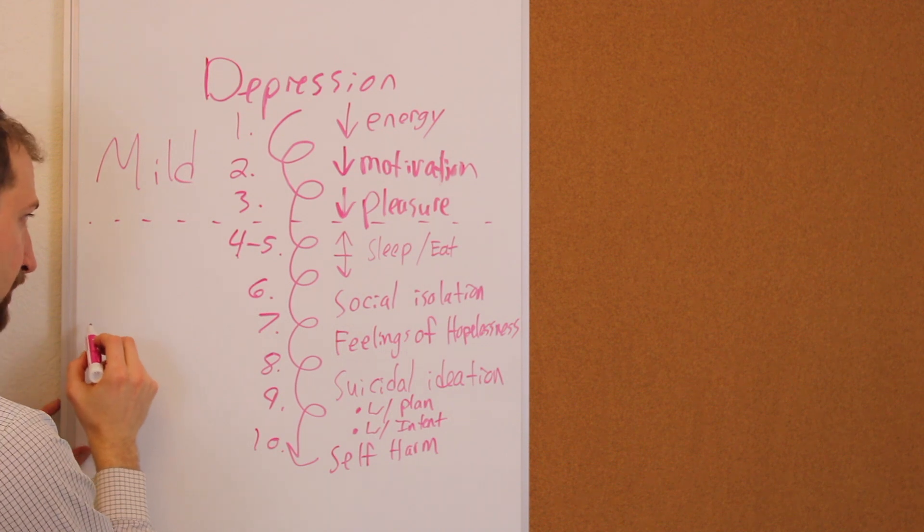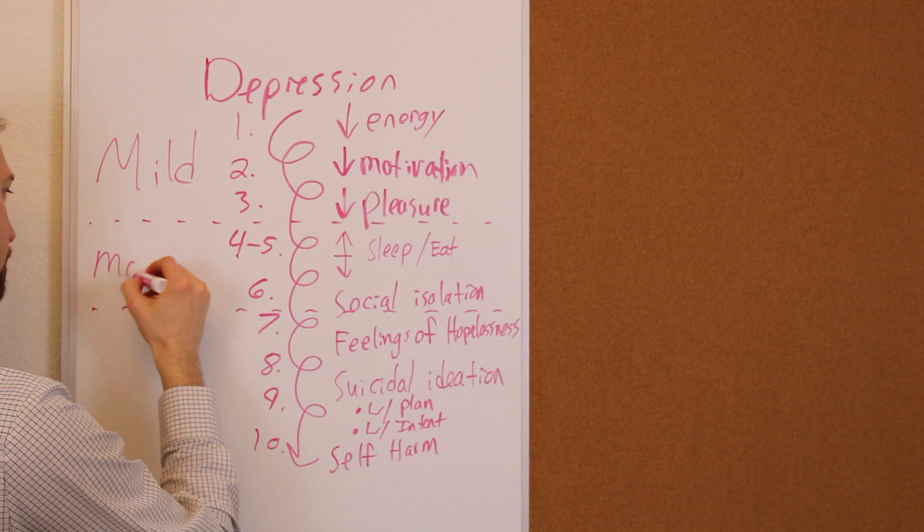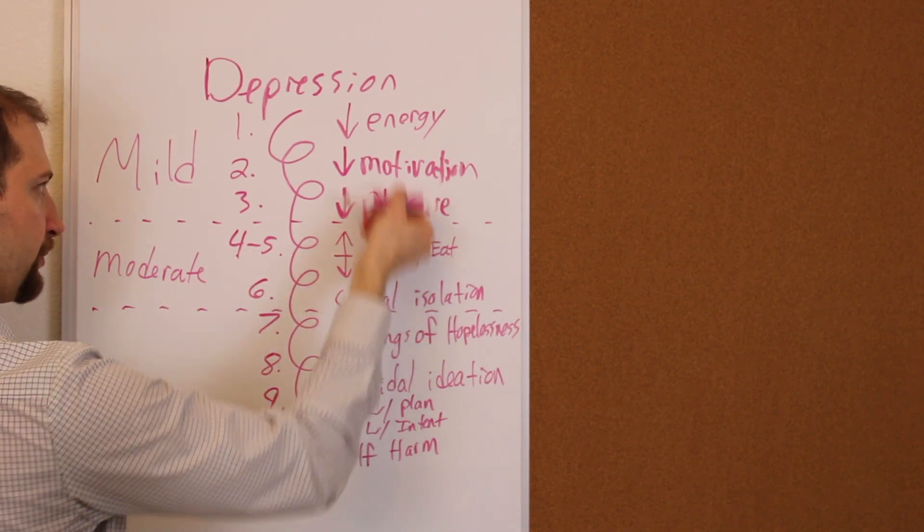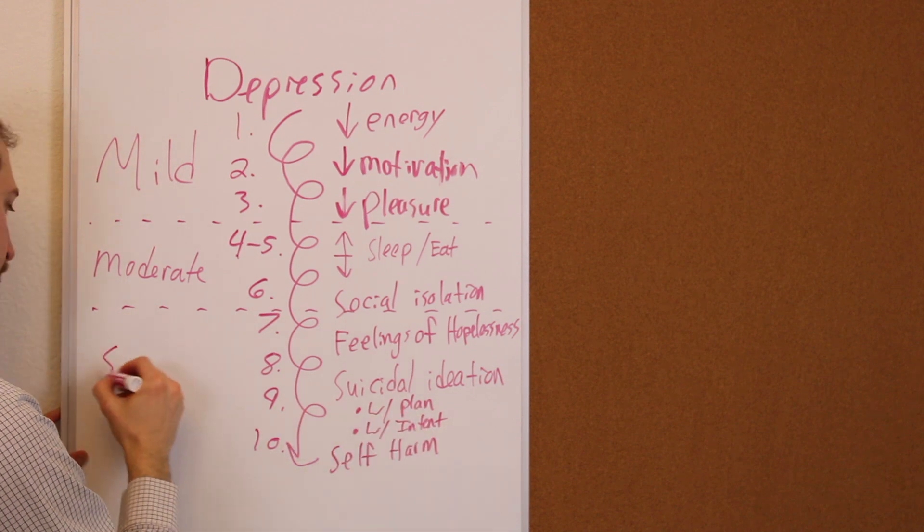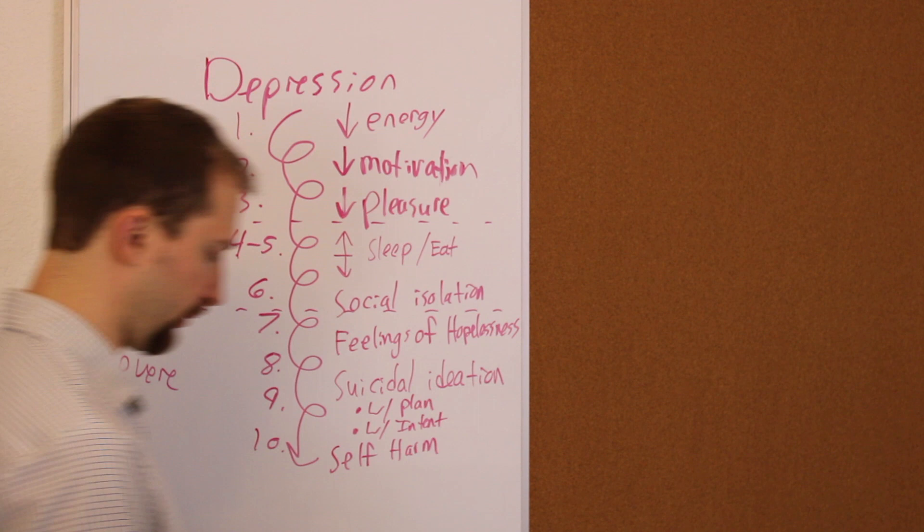We have the cutoff here. So this would be a moderate depression, meaning we have these symptoms and the ones above it. And then down here is more severe depression, where we have really all of them.